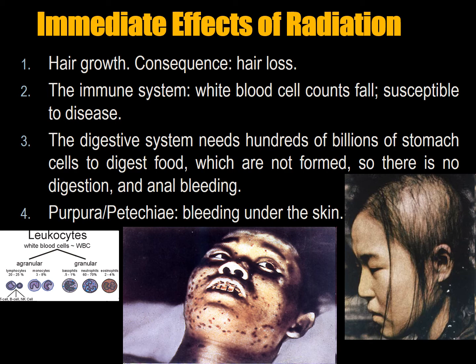The immune system, which has many specialized cells like macrophages and white blood cells, must be rebuilt every day. Radiation disrupts this replication, causing low white blood cell counts and susceptibility to disease. The interesting thing is that we didn't have plagues after Hiroshima and Nagasaki, probably because the thermal shock destroyed all the surface pathogens outside.